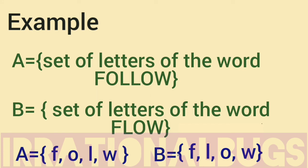If we see, then sets A and B have same elements. Both have F, L, O, W. So, they are equal sets.